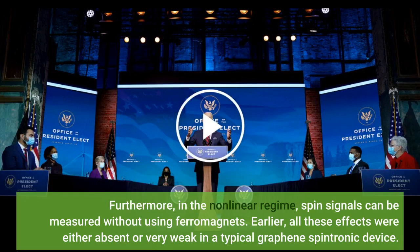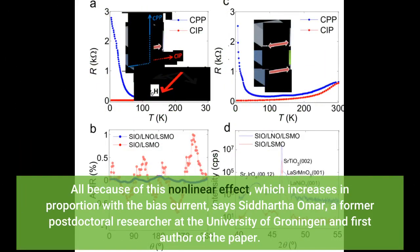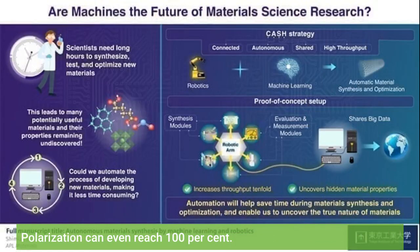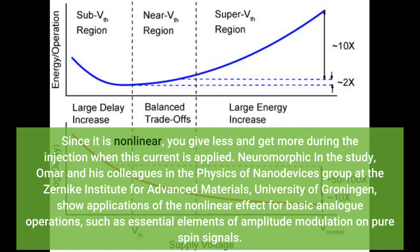Furthermore, in the nonlinear regime, spin signals can be measured without using ferromagnets. Earlier, all these effects were either absent or very weak in a typical graphene spintronic device. All because of this nonlinear effect, which increases in proportion with the bias current, says Siddhartha Omar, a former postdoctoral researcher at the University of Groningen and first author of the paper. Polarization can even reach 100%. Since it is nonlinear, you give less and get more during the injection when this current is applied.